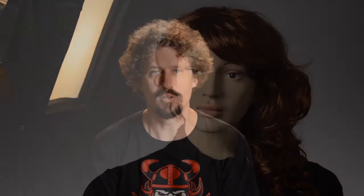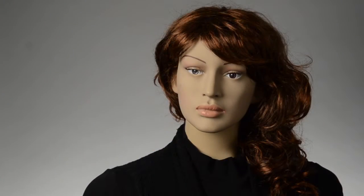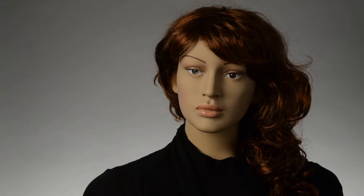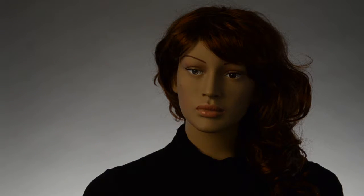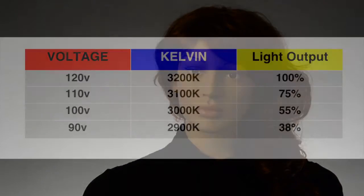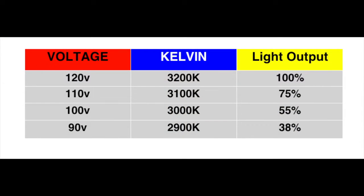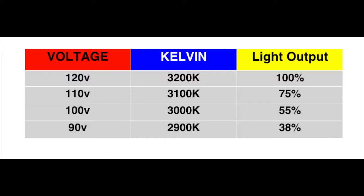If your tungsten light is going through a dimmer, it will also get warmer as you dim it down. A good rule of thumb is 10 degrees Kelvin per volt. As an example, if you dim your light from 120 volts down to 100 volts, you will change the color temp of the light from 3200K down to 3000K.